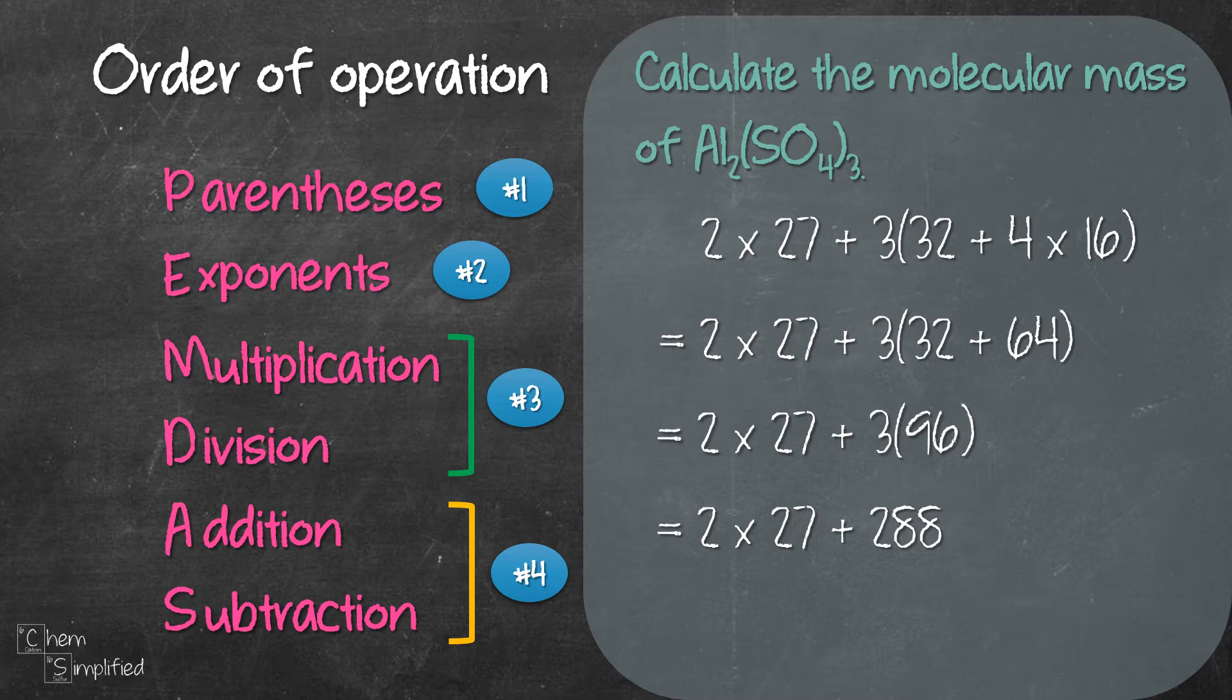Now we have finished solving everything inside the bracket so now we have 2 times 27 plus 288. Following the PEMDAS rule, multiplication has higher priority than addition so we need to first multiply 2 with 27 then only we add to 288 so that will give us 54 plus 288. That's 342.